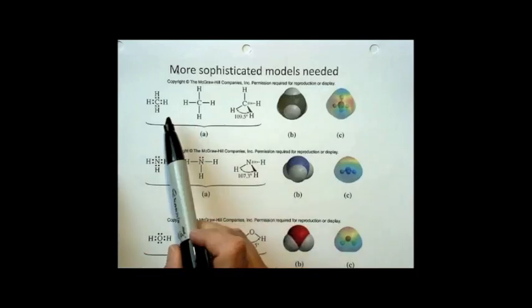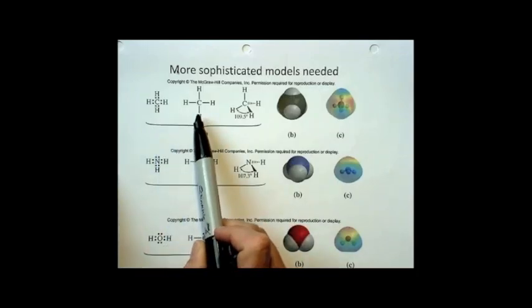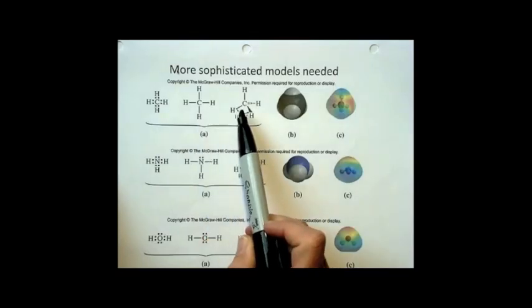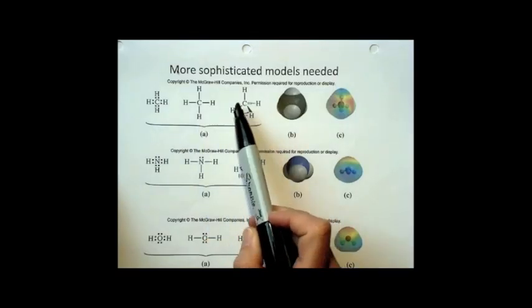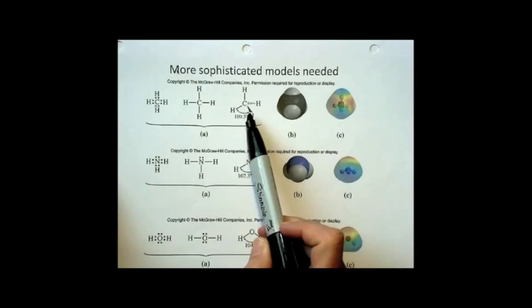We need to have the Lewis structure. From the Lewis structure, we need to be able to determine the three-dimensional structure. This is that wedge-dash business I was telling you about.